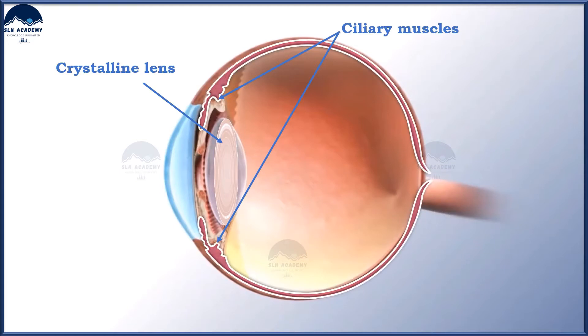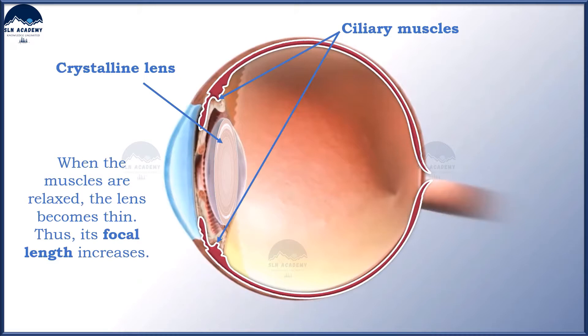When the muscles are relaxed, the lens becomes thin, thus its focal length increases. This enables us to see distant objects clearly.